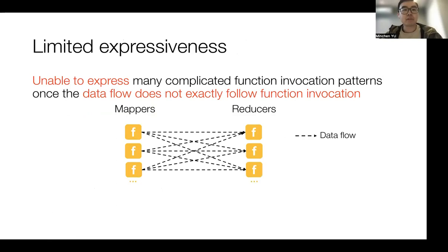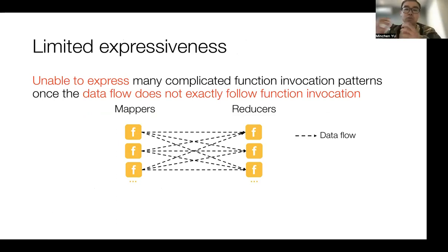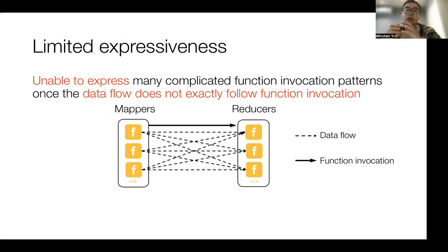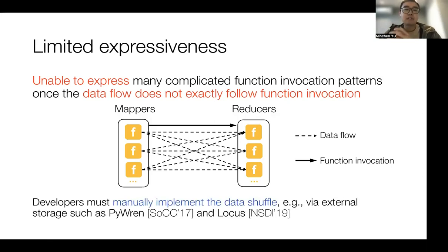Let's take the example of MapReduce, which is the classical operation in data analytics. In MapReduce, it needs a fine-grained all-to-all data shuffle between the mappers and the reducers. When running in a serverless platform, the current orchestration service can only trigger the mapper and reducer functions, but cannot handle the underlying data exchange. As a result, developers typically need to manually handle the data shuffle, probably via external storage.